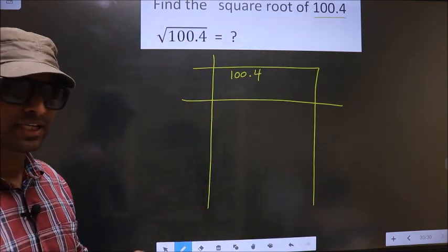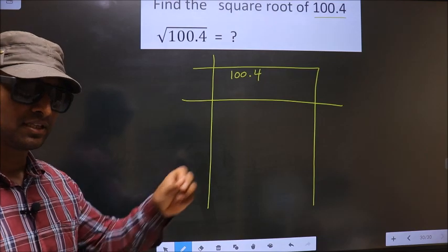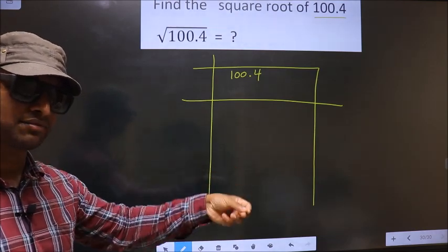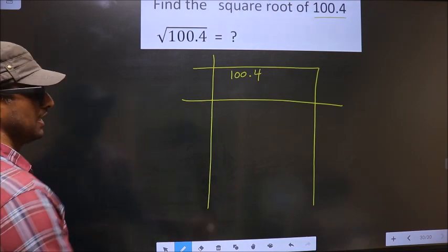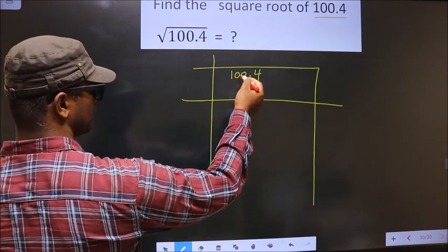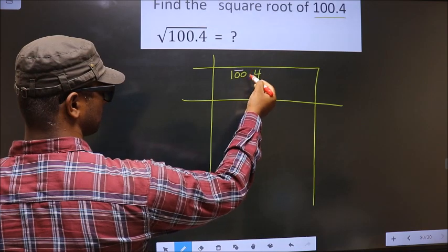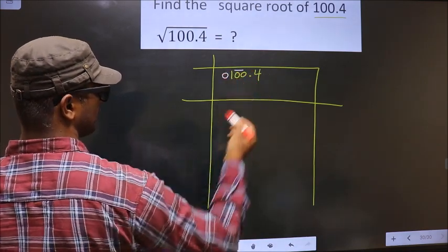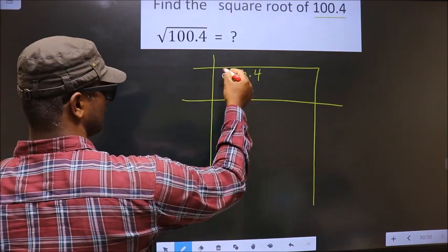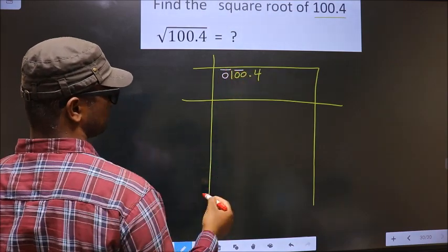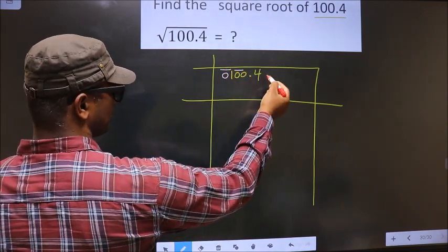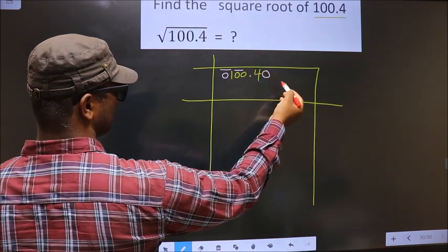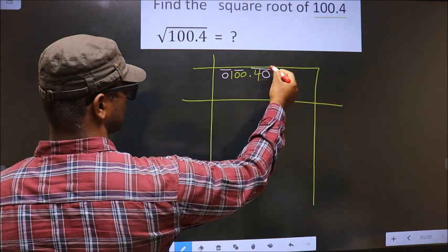Now we should divide the given number into pairs. Pairs before the decimal and also pairs after the decimal. So decimal is here. Before the decimal, these two numbers, one pair. Here we have only one number. Even if I take 0, it doesn't make any difference. So these two numbers, another pair. Now after the decimal, only one number we have. Even if I take 0, it doesn't make any difference. So these two numbers, another pair.